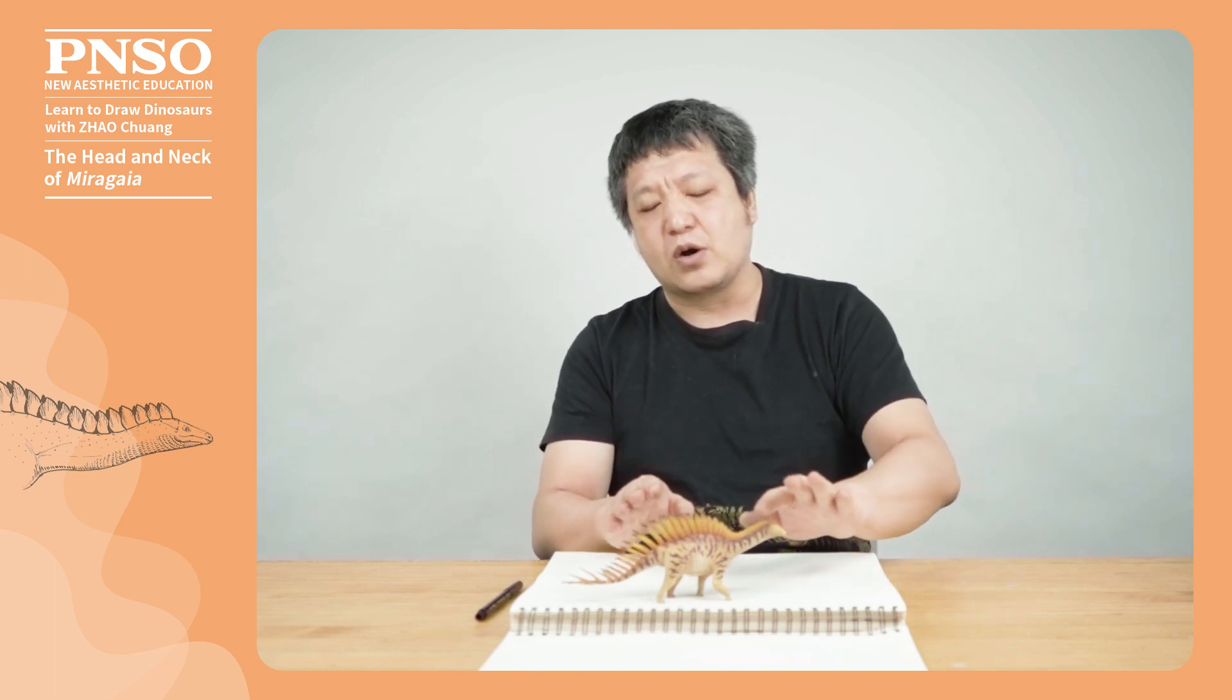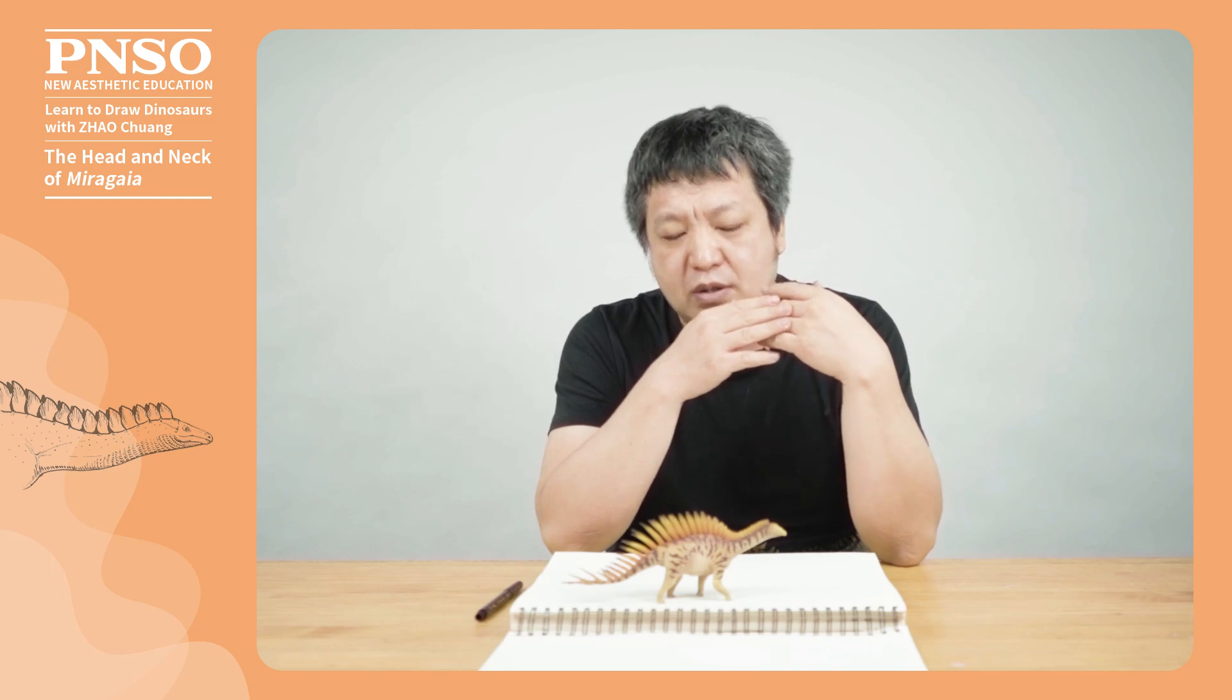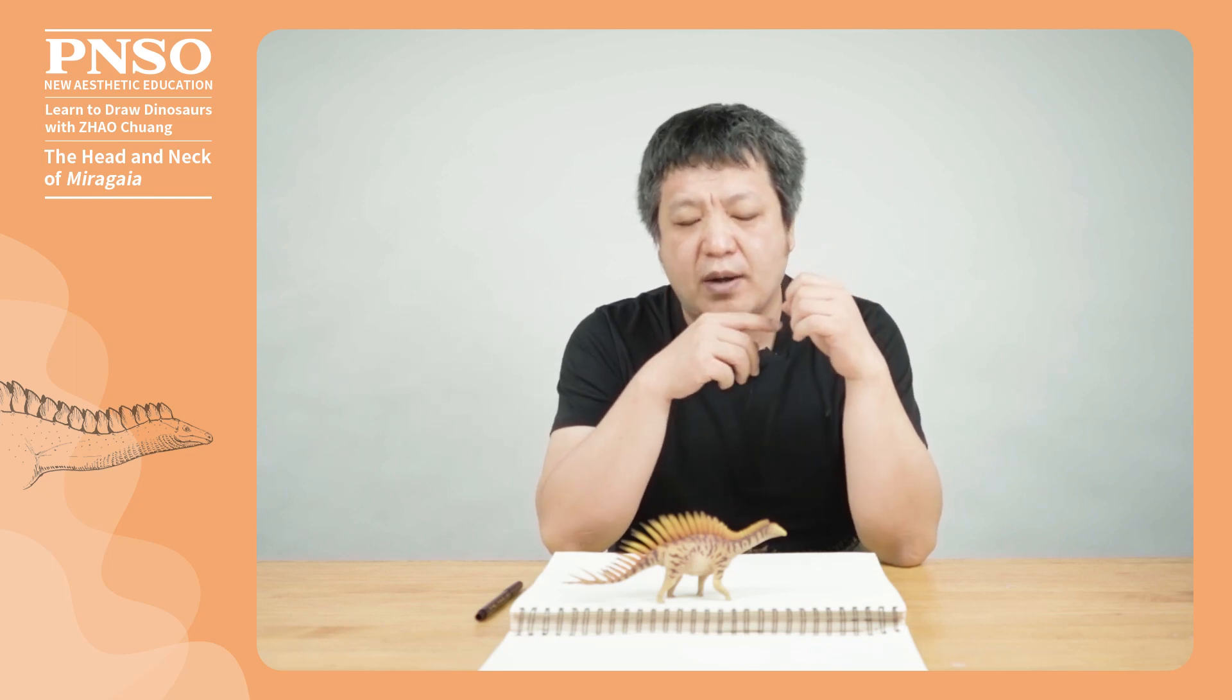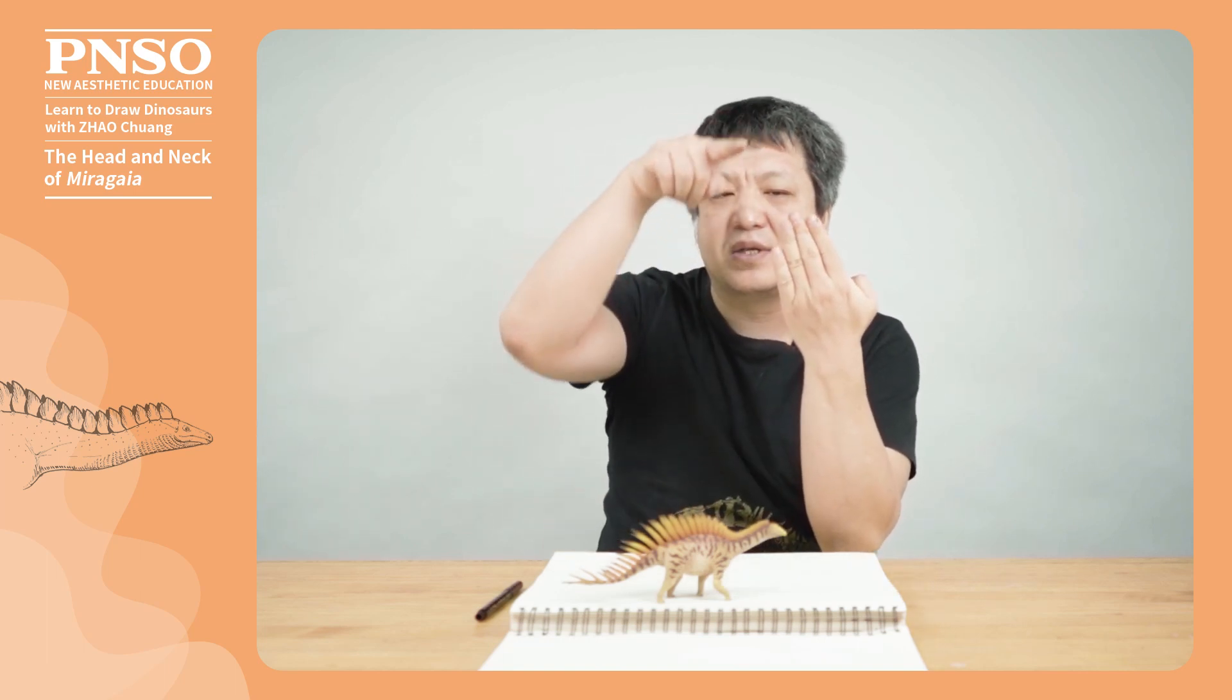When drawing this dinosaur, we should know that the bony plates on its neck would be much larger than seen on the fossils. When it was alive, a layer of keratinous structure wrapped the bony plate surface.